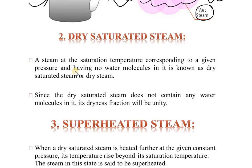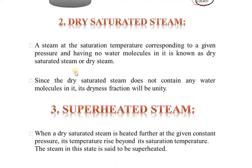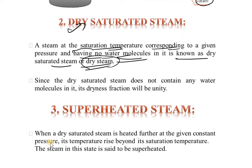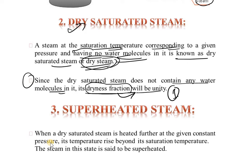Dry steam is at saturation temperature corresponding to a given pressure and has no water molecules in it. It is known as dry saturated steam or simply dry steam. Since dry saturated steam does not contain any water molecules, its dryness fraction will be unity — dryness fraction equals 1.